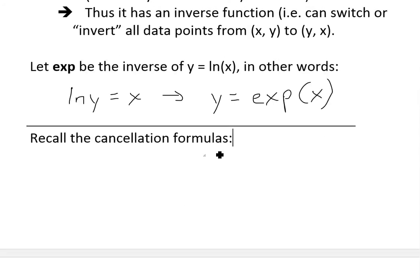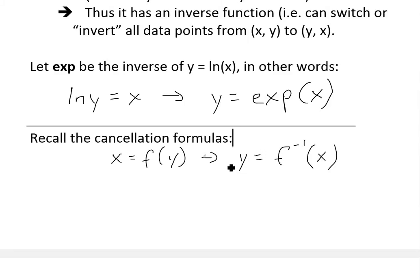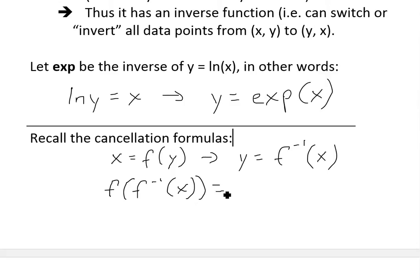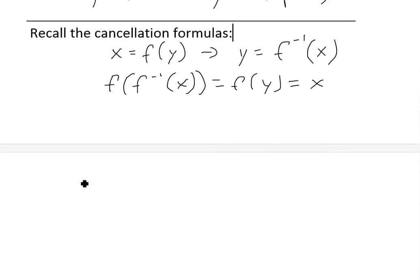Before going further, I want to recall the cancellation formulas from my earlier video. If x equals f(y), then y equals f inverse of x — that's the inverse where you solve for y. The cancellation equation says: if you put the inverse back inside the function f, so f of f-inverse of x, this equals y, which means f of y, which just equals x. So these cancel out.